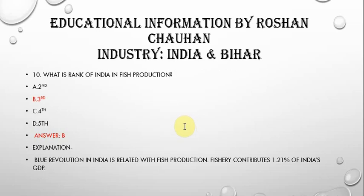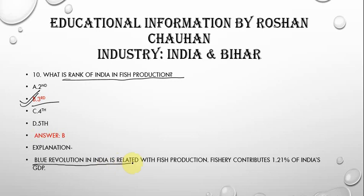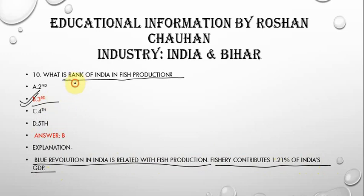The next question is: what is India's rank in fish production? India's rank is 3rd. The Blue Revolution in India is related to fish production. Fishery contributes 1.21% of India's GDP.